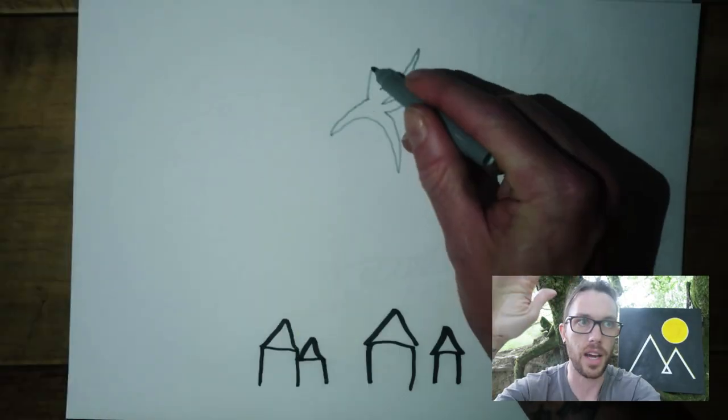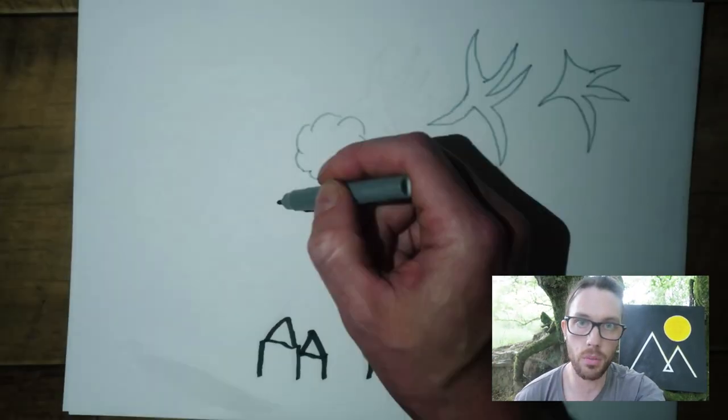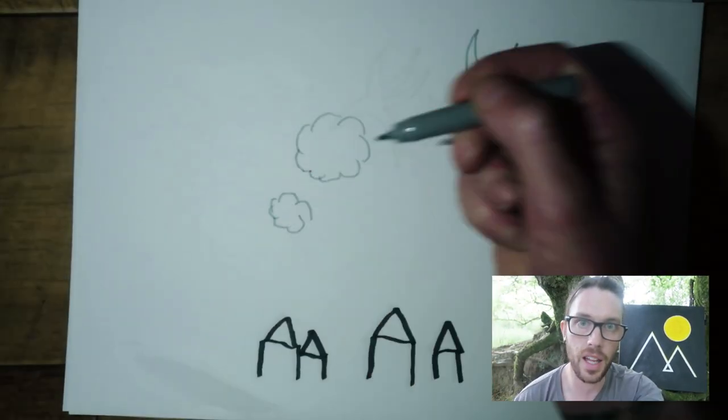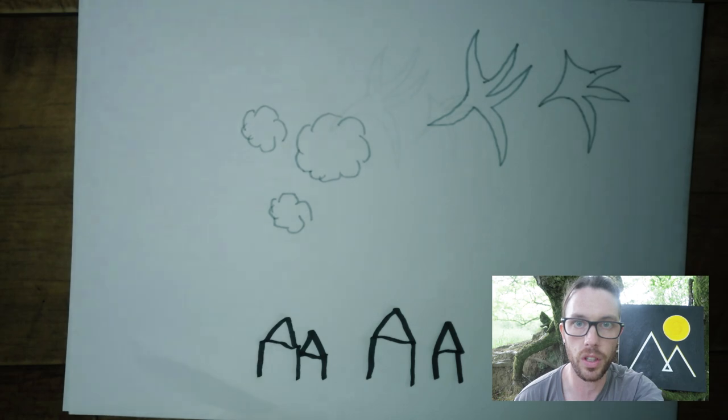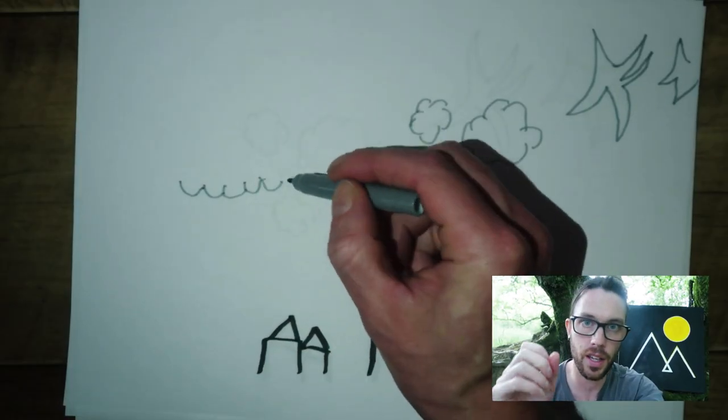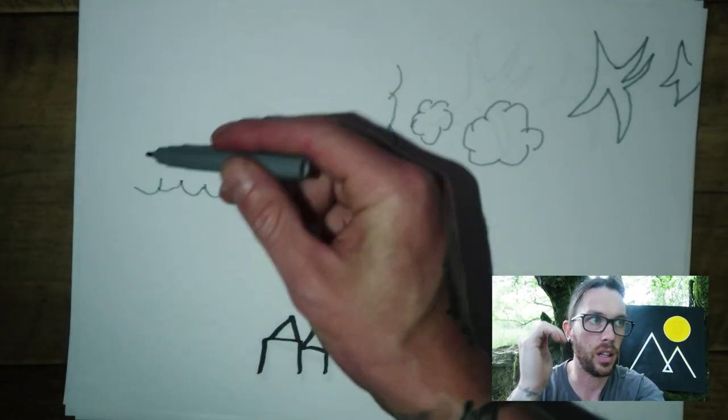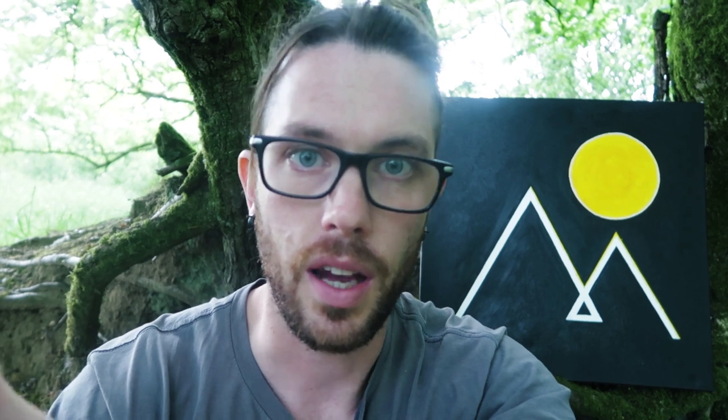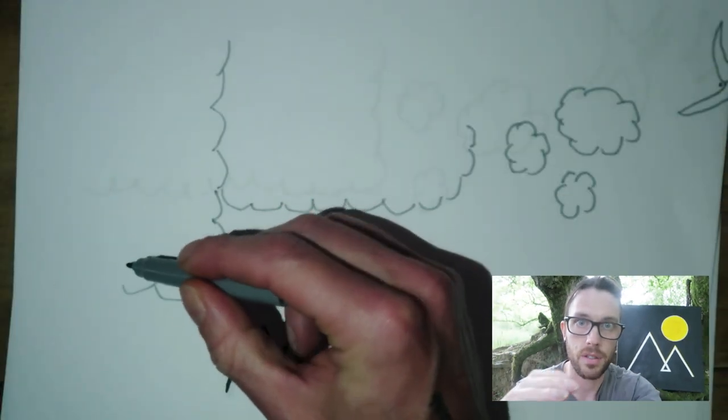With a warm front, you would usually get the wispy cirrus clouds first. Then you get the cumulus clouds — they're like fluffy cotton wool looking things. Then you get the stratus clouds, which look like a blanket. They can be quite low or appear quite high and look like a blanket of grey cloud. Then you get the nimbostratus.